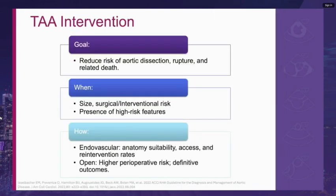The overarching goal in management is to reduce the risk of aortic complications — the question is when and how to intervene. At a diameter of 6 cm, the descending thoracic aortic aneurysm reaches a tipping point where risk of complications increases exponentially. However, high-risk features that may justify earlier intervention include rapid aortic growth of more than 0.5 cm per year, symptomatic aneurysms, associated connective tissue or heritable thoracic aortic diseases, saccular morphology, female sex, and infected aneurysms.